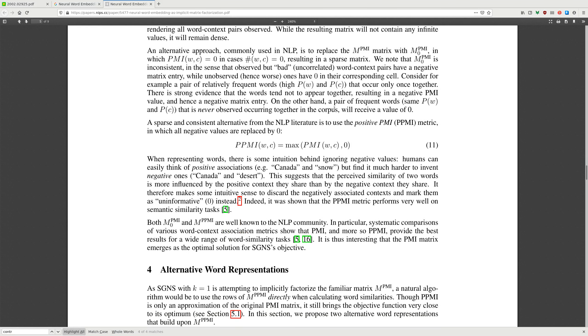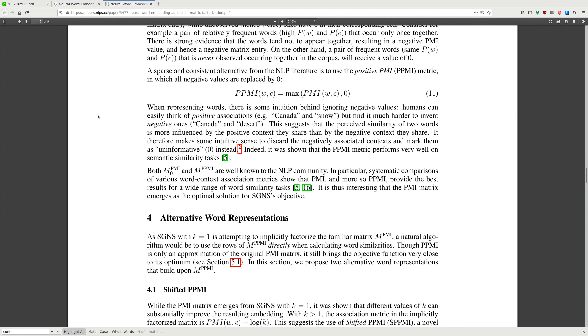We know that positive PMI is inconsistent in the sense that observed but uncorrelated word pairs have negative matrix entries, while unobserved hence independent words have 0 in their corresponding cell. Consider, for example, pairs of frequent words with high probability that occur only once together. There is strong evidence that the words tend not to appear together, resulting in negative PMI values, hence negative matrix entry. On the other hand, a pair of frequent words with the same probability that is never observed occurring together. So the solution is max of PMI and zero.